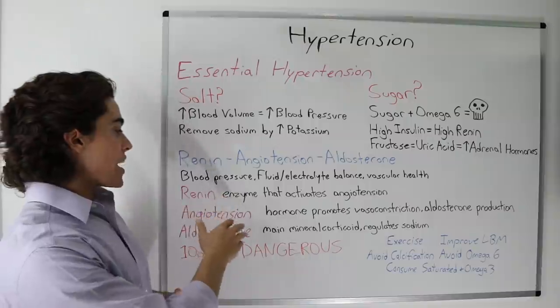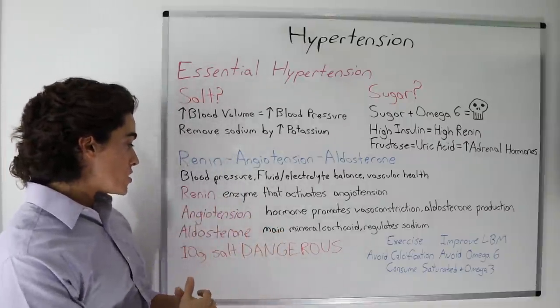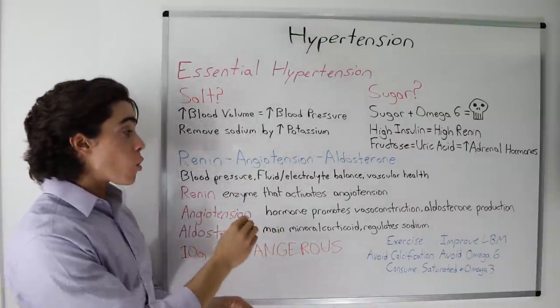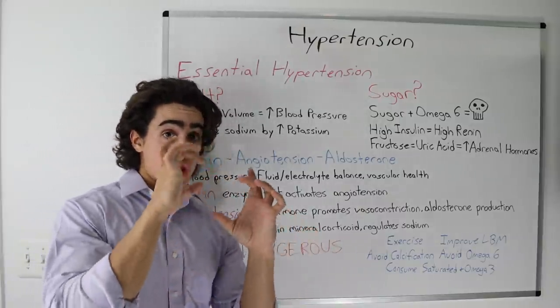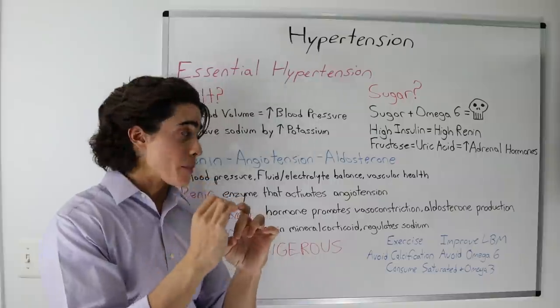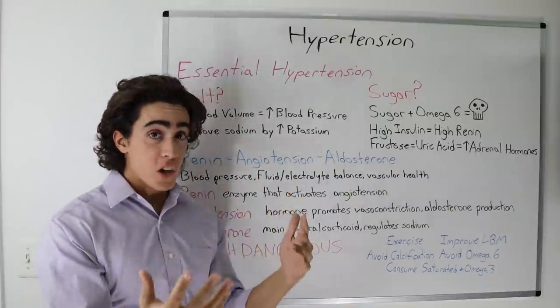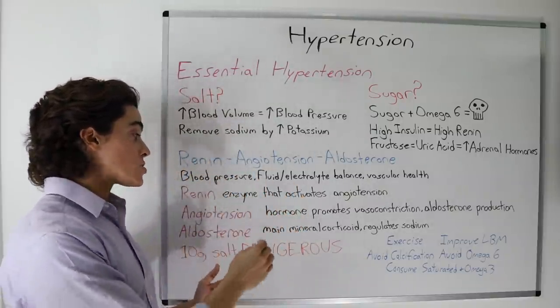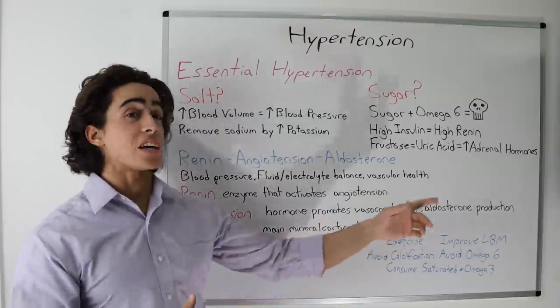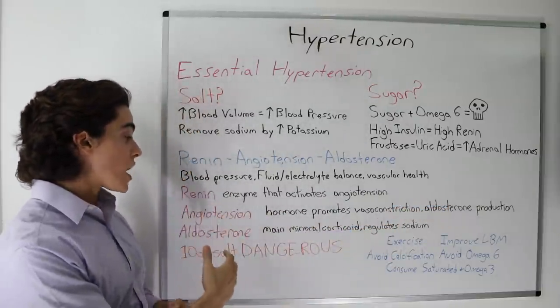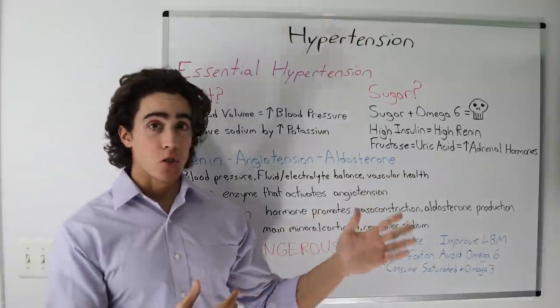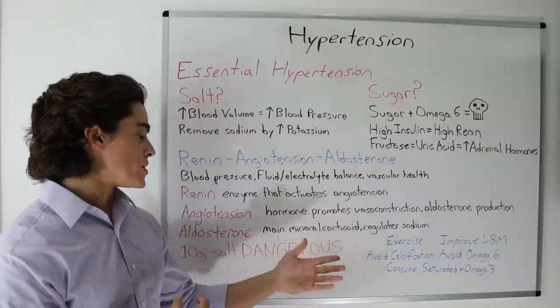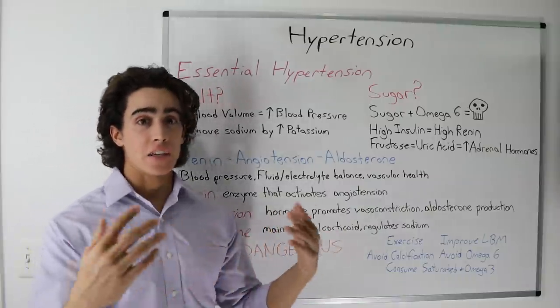So you have renin, which is an enzyme that activates angiotensin. Angiotensin is a hormone that promotes vasoconstriction, the constricting of the blood vessels, and that means less room for blood to flow, which can increase blood pressure if it's not regulated properly, as well as aldosterone production. Aldosterone being the main mineralocorticoid that regulates sodium. Mineralocorticoids being hormones produced by the adrenals.